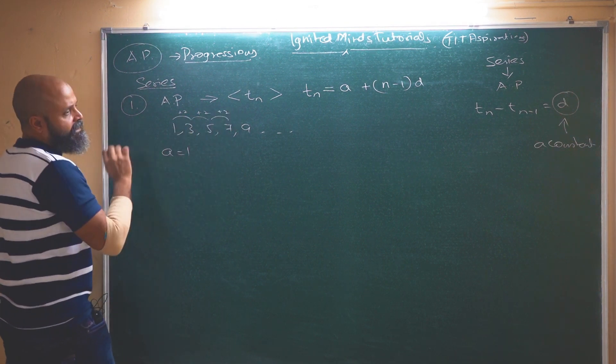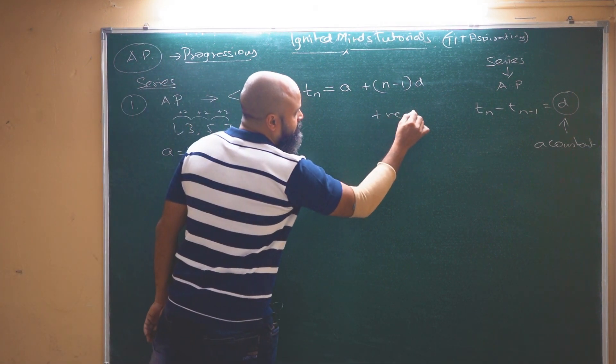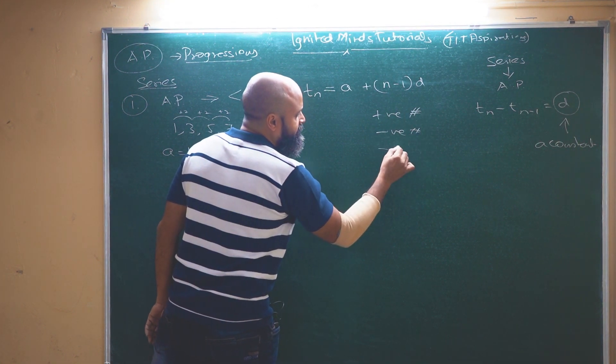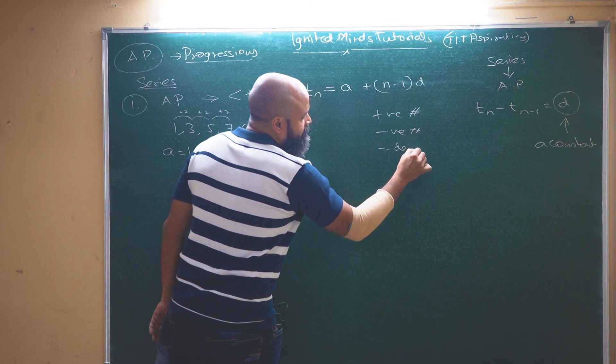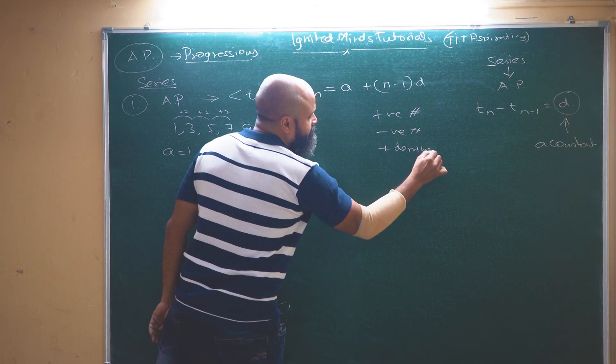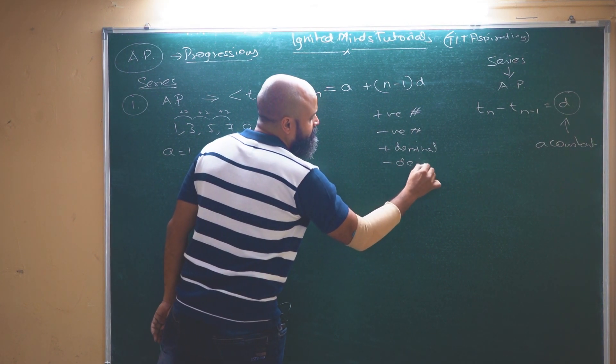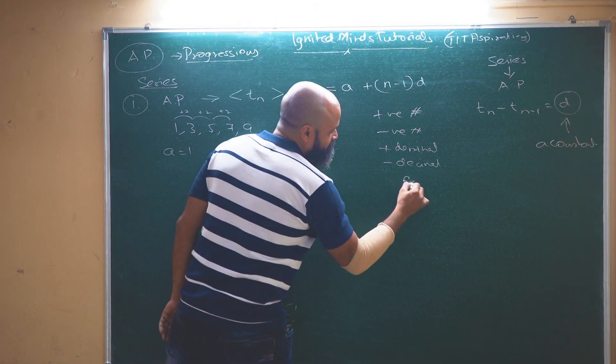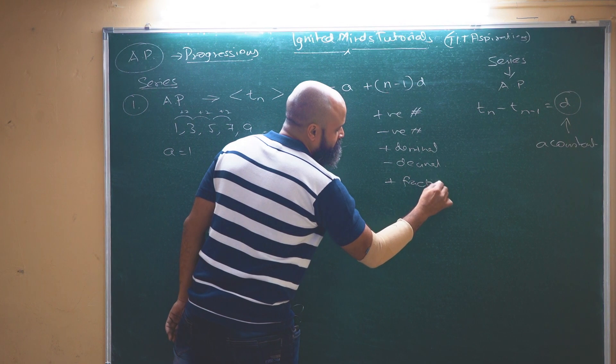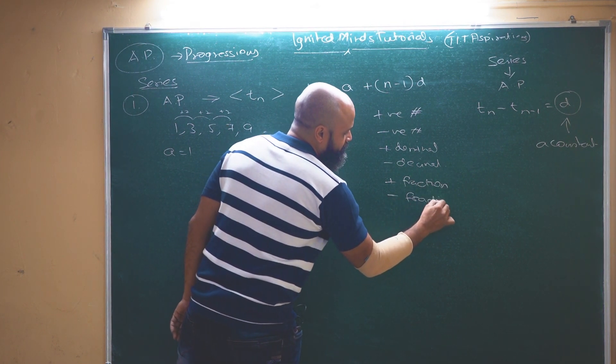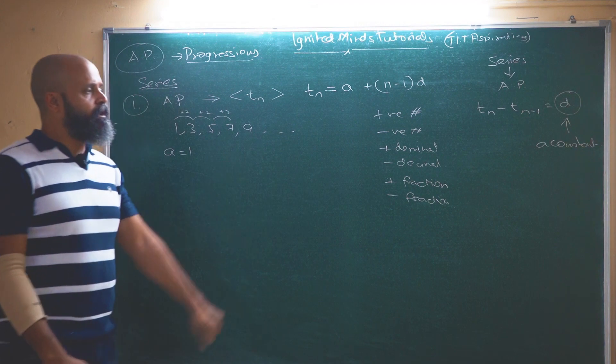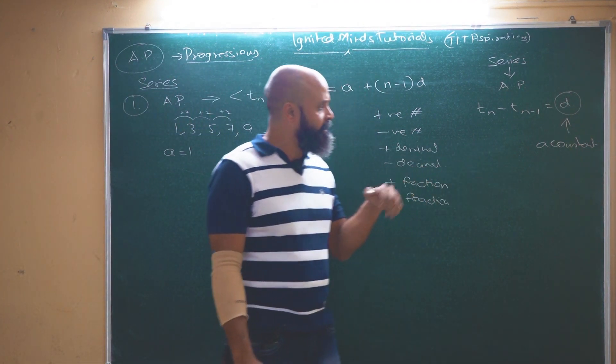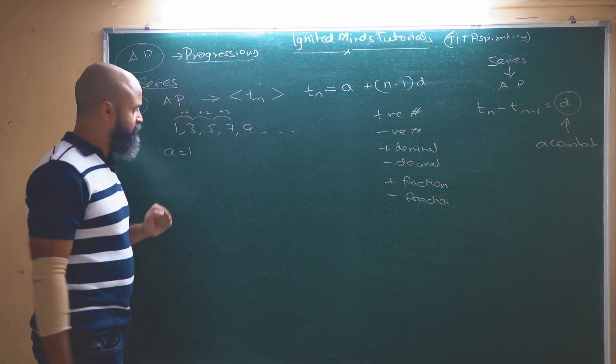This common difference can be anything. It can be a positive number, it can be a negative number and it can be a decimal, a positive decimal, it can be a negative decimal and it can be a fraction as well, a positive fraction or it can be a negative fraction as well. So we will just quickly look into the terms which you have already studied most of in the tenth standard and now we are going to take it ahead from here.